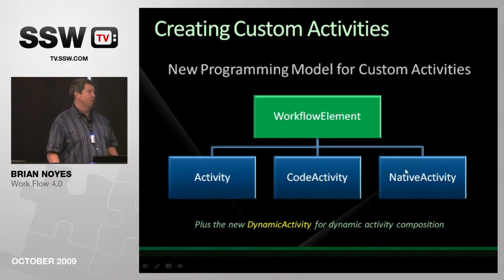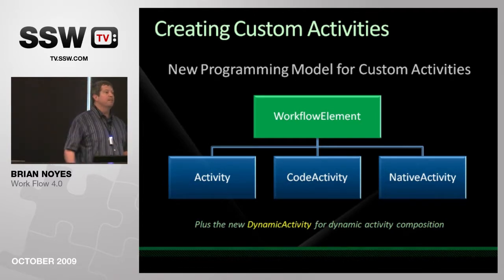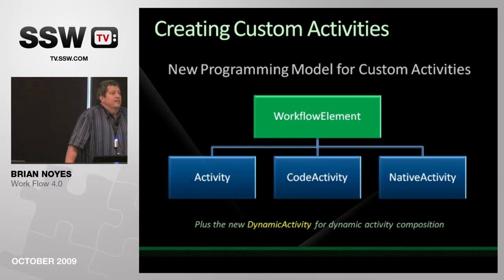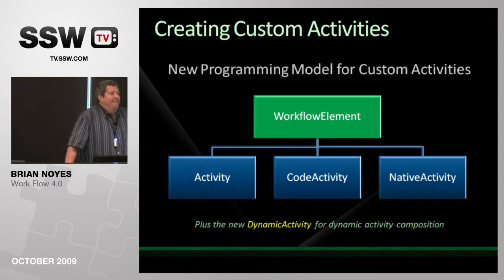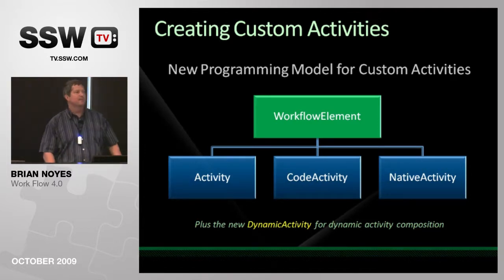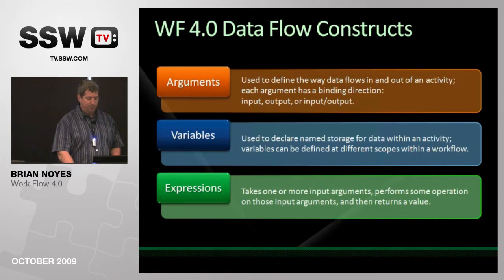An audience member mentions that today on the Workflow team blog they posted the new diagrams of the activity hierarchy and a list of all changes between Beta 1 and Beta 2. The speaker notes he hadn't found that yet, having been teaching class all day. The blog is at blogs.msdn.com/workflow. The speaker also hopes the team will get sample demos out soon.